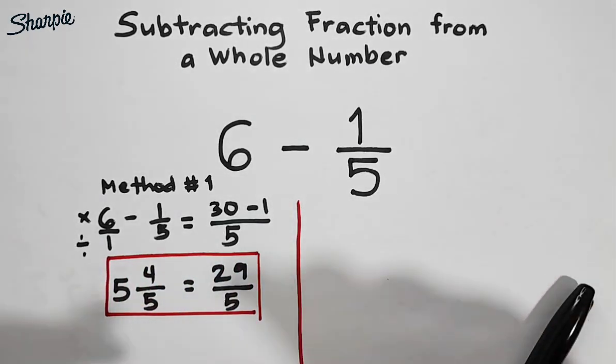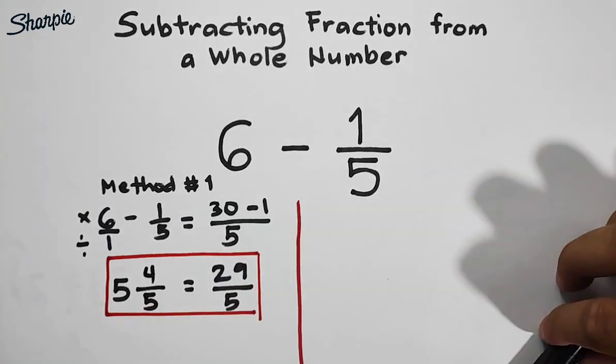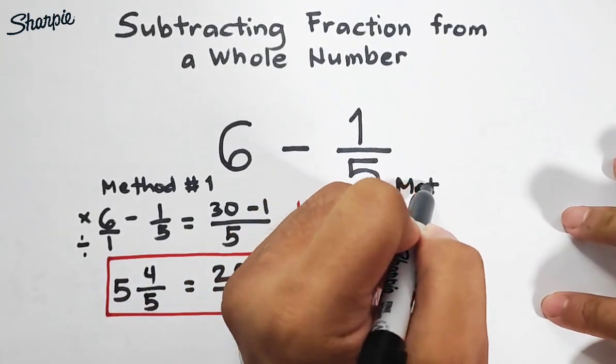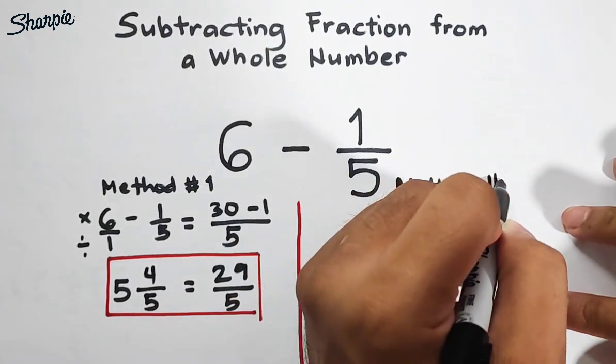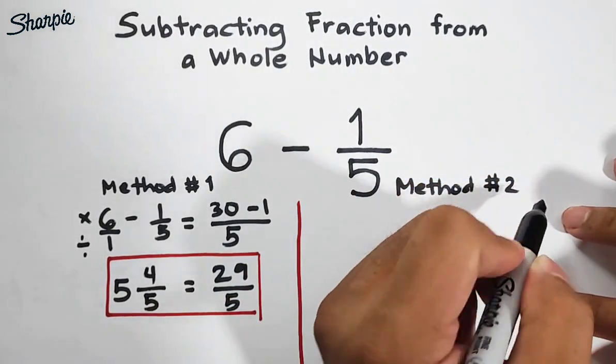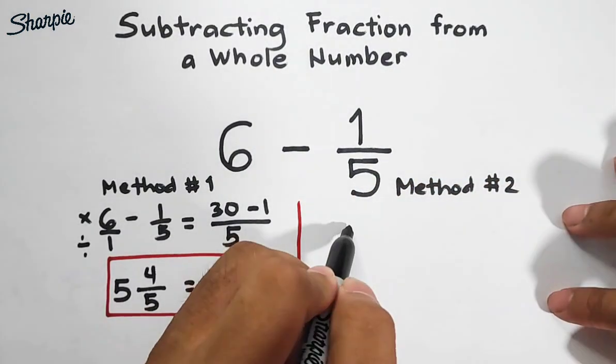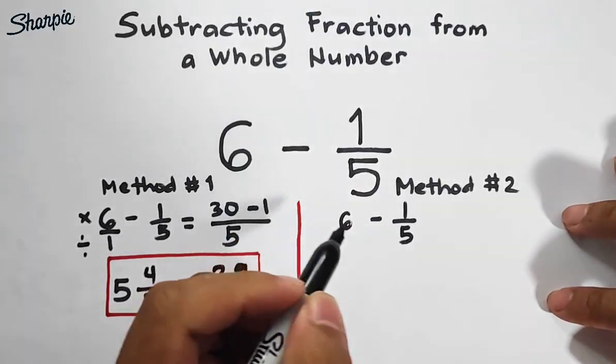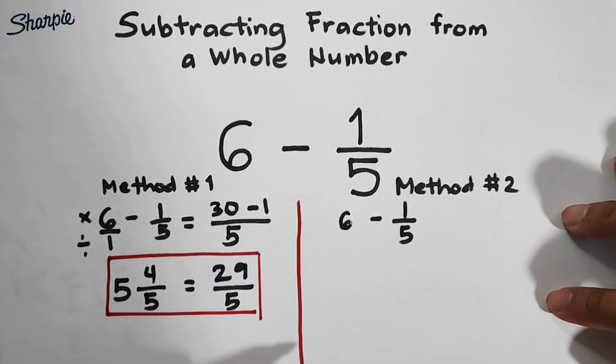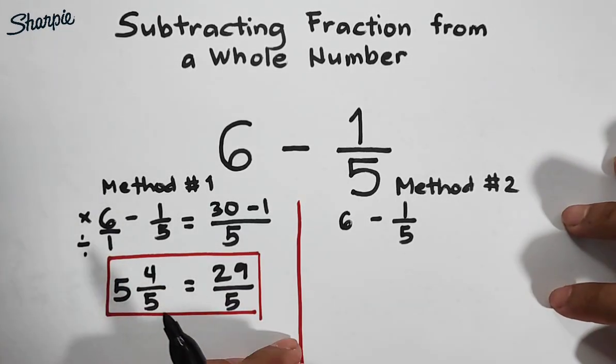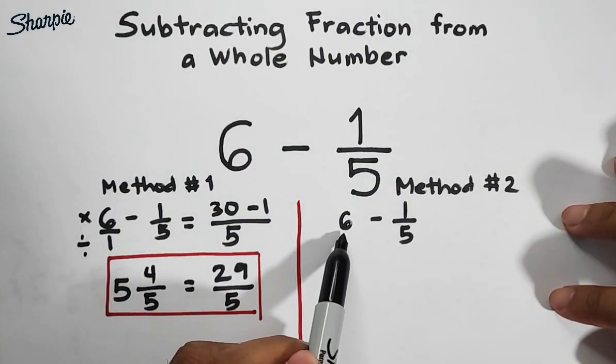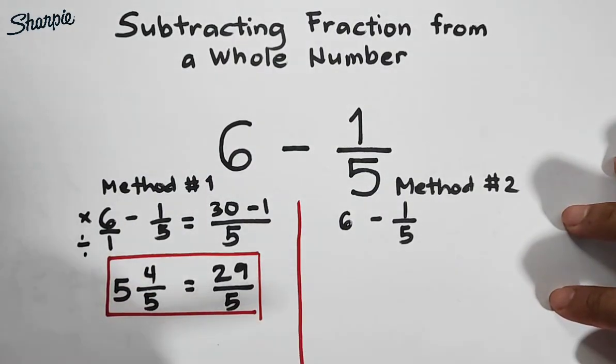Now for the second method, let's try method number 2. We have 6 minus 1 over 5. For this technique, I will express 6 as a fraction.